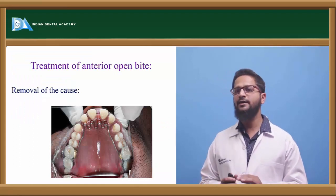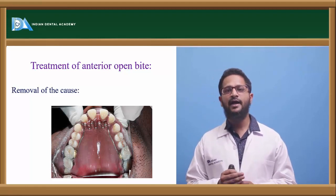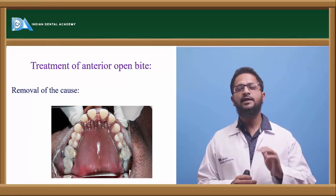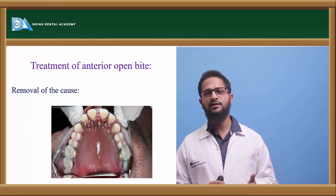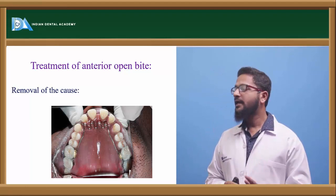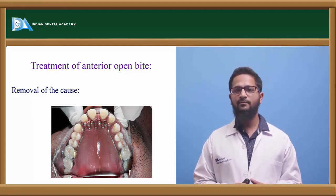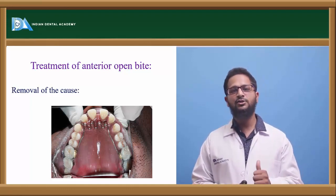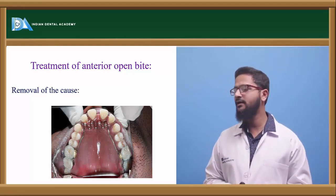What is the treatment of anterior openbite? First is removal of the cause. If this openbite has occurred because of habits like thumb sucking or tongue thrusting, that habit has to be intercepted, otherwise relapse will occur. Interception can be done by the use of various habit breakers — it can be in the form of a tongue crib, which helps to prevent the tongue from thrusting anteriorly and also acts as a habit reminder for patients with thumb sucking habit.